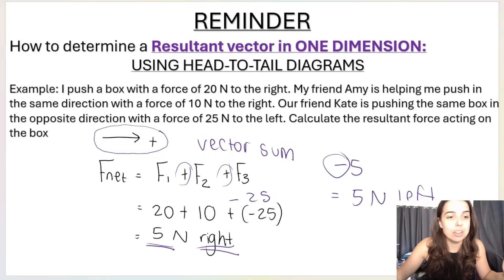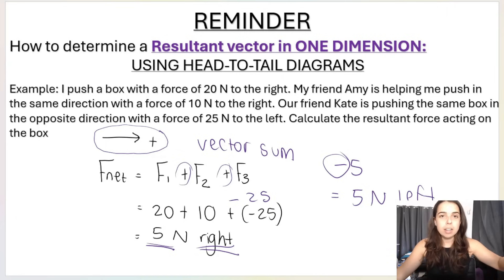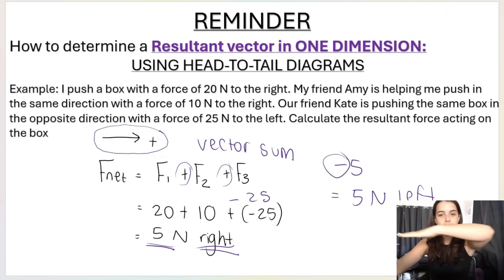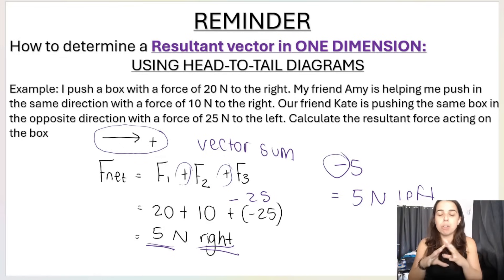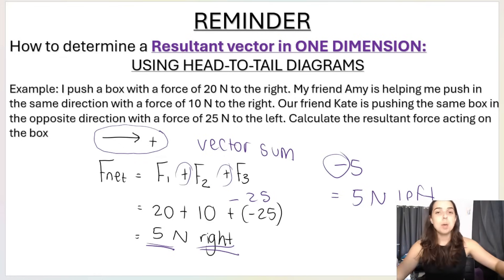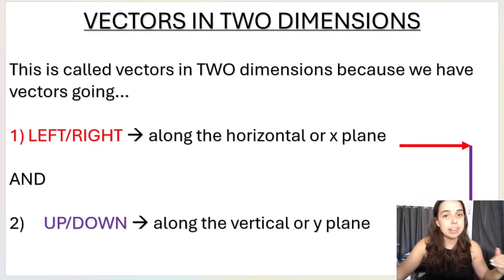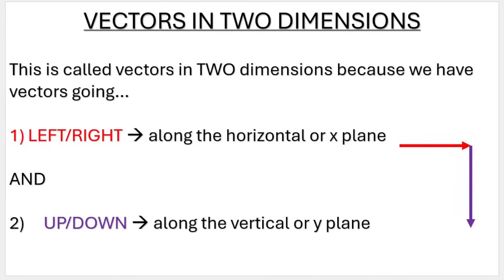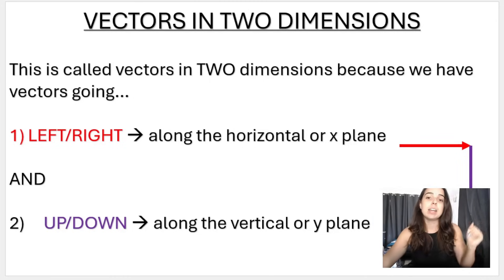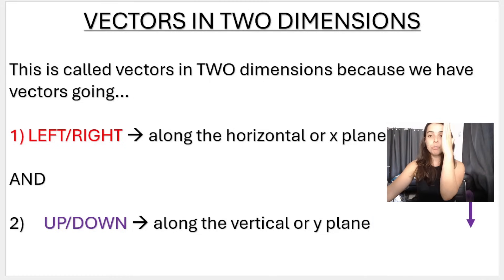Now moving on to vectors in two dimensions. One dimension is either left and right along the X axis, or up and down — that's one dimension. But vectors in two dimensions involve both up and down along the Y axis and left and right along the X axis — along the horizontal or X plane, and up and down along the vertical or Y plane.